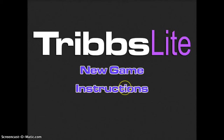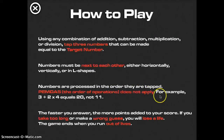If I click on the instructions, it tells me that I'm going to be given a grid, and within that grid I can use any combination of addition, subtraction, multiplication, or division. Then I'm going to tap on only three numbers to make a target number. The trick is that the numbers must be next to each other, whether it's horizontally, vertically, or in L shapes. The numbers are processed in the order that they are tapped, so it doesn't necessarily mean that order of operations apply.